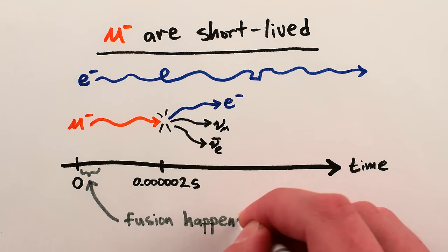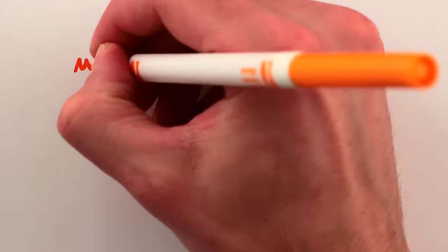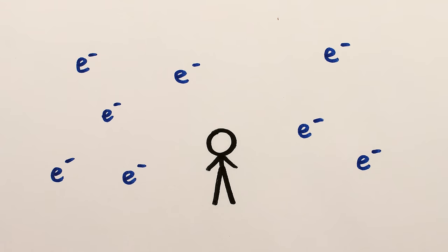This turns out not to matter much for the purposes of facilitating fusion, but because of their short lifespan, there aren't a ton of muons around.